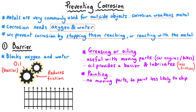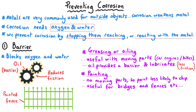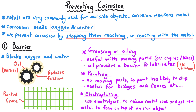Alternatively you might paint the metal, which is probably the most common barrier method. You need to make sure the metal won't move around much so that the paintwork won't get chipped. Bridges, fences, and small structures are very commonly painted, and this will keep out oxygen and water for a long period of time. The third common barrier method is electroplating, where you coat the metal with another metal using electrolysis, depositing it on top of the iron so the iron underneath won't corrode.